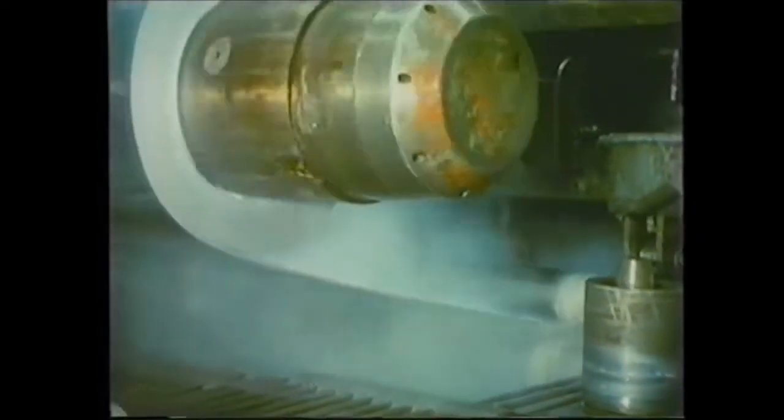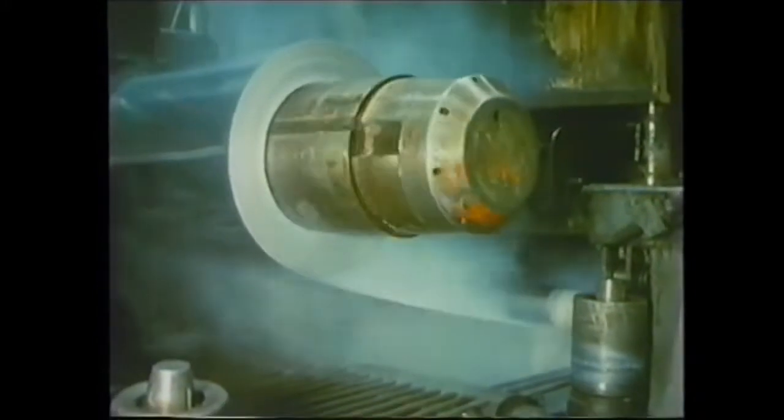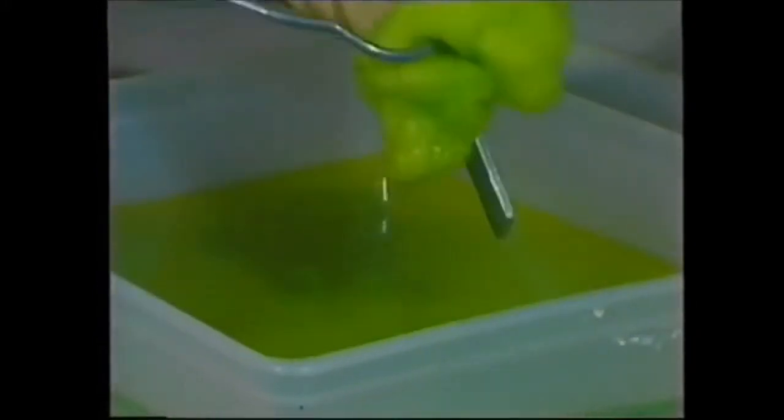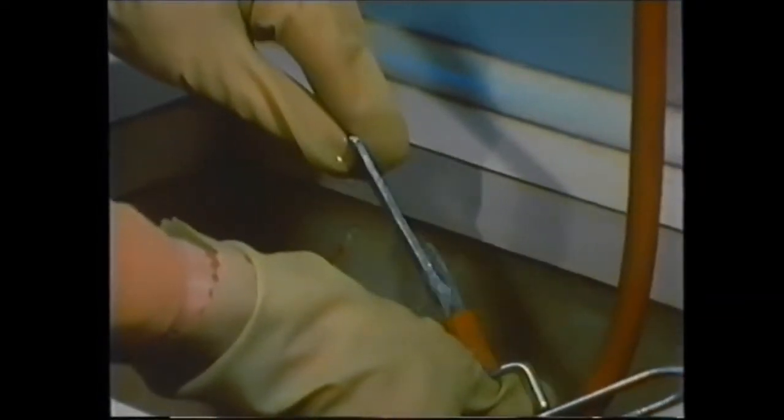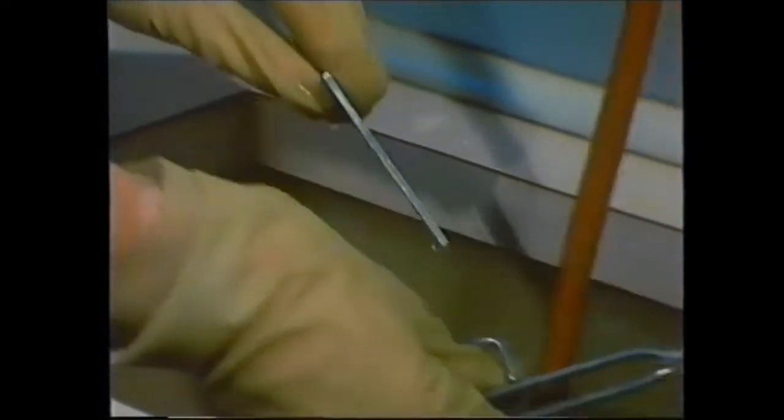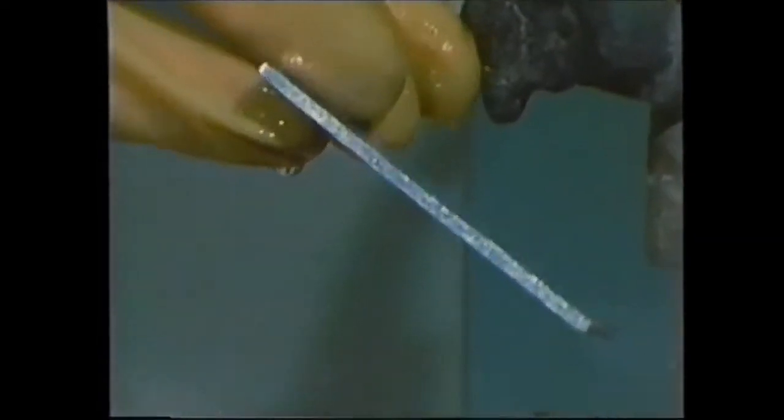Let's find out what effect the cold-working has on the grain structure of the aluminium. Here, we're etching a piece of the aluminium before cold-working. At this stage, the grains are all approximately the same size and the same shape. Remember, they appear different shades only because of the way they reflect the light.